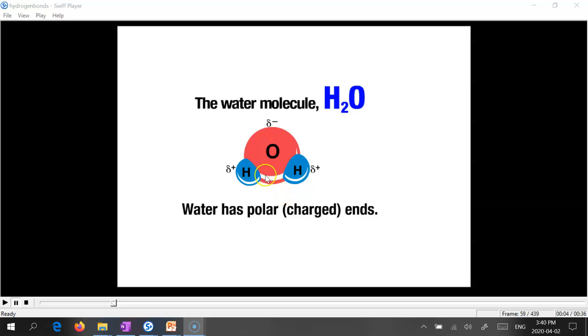This is due to the unequal sharing of electrons within the chemical bonds. The oxygen atom tends to hold onto electrons, or rather the electrons spend more time around the oxygen atom on this side, giving it a partial negative charge. This end has a deficit of electrons, making this end slightly positively charged.